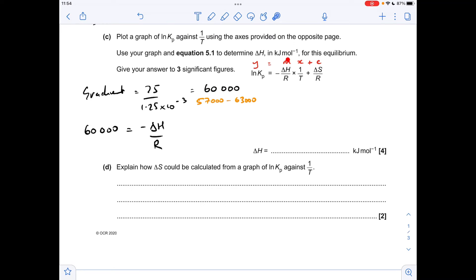So remember the gradient, the m term is this minus delta H over R, so 60,000 for me equals minus delta H over R. So that means delta H equals minus 60,000 times R, which is 8.314. So that's given me a calculated value of minus 498840 joules per mole.